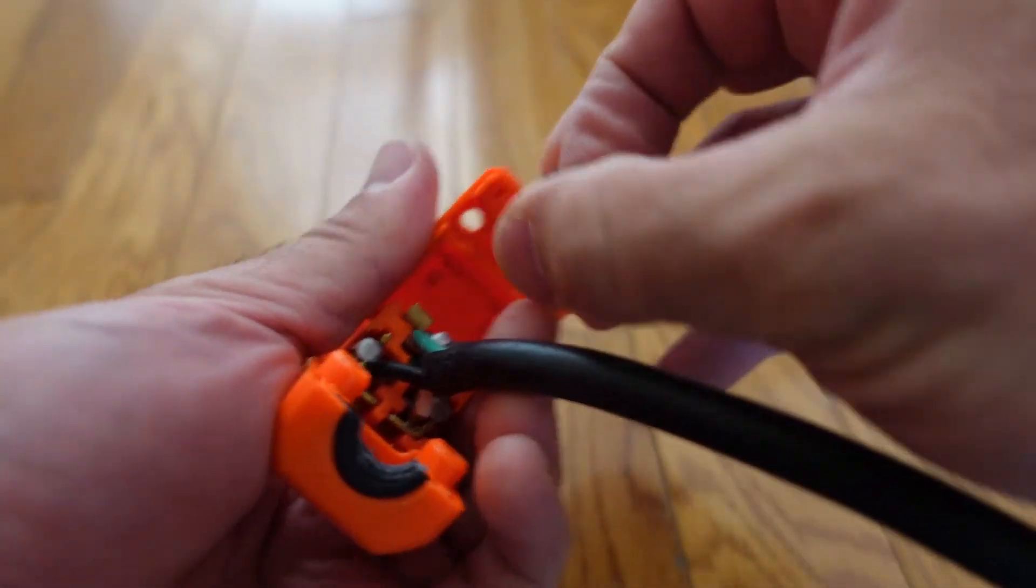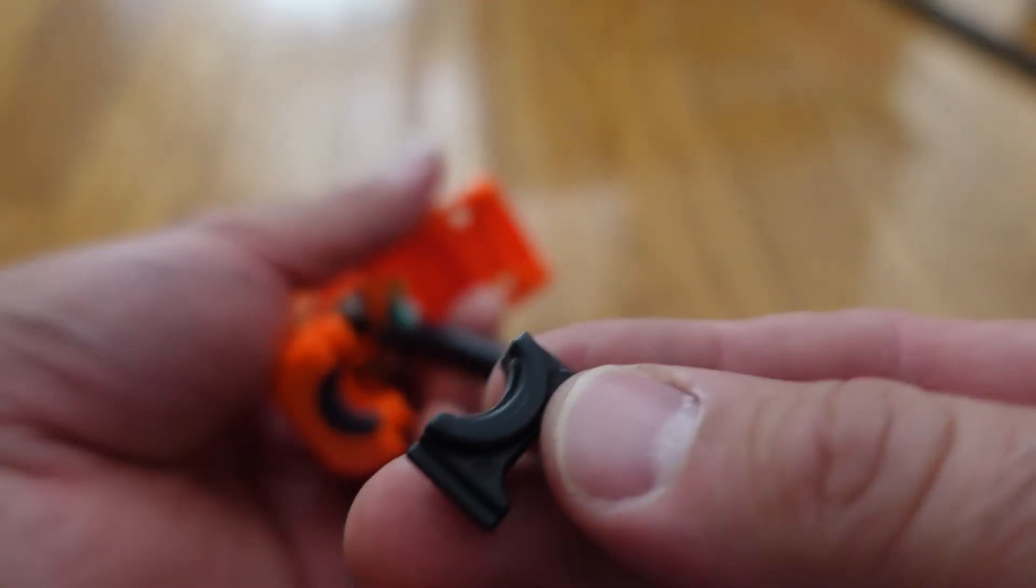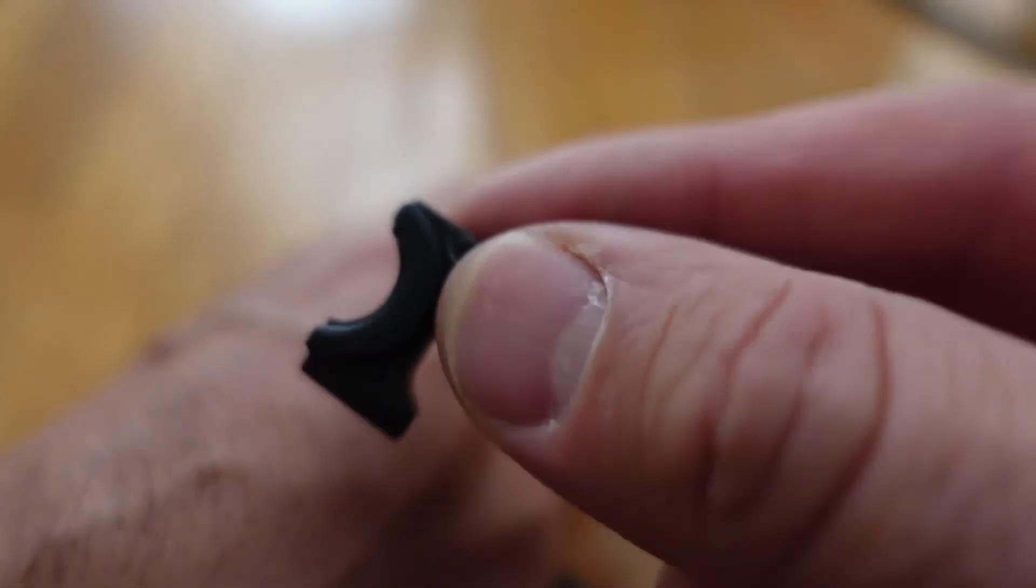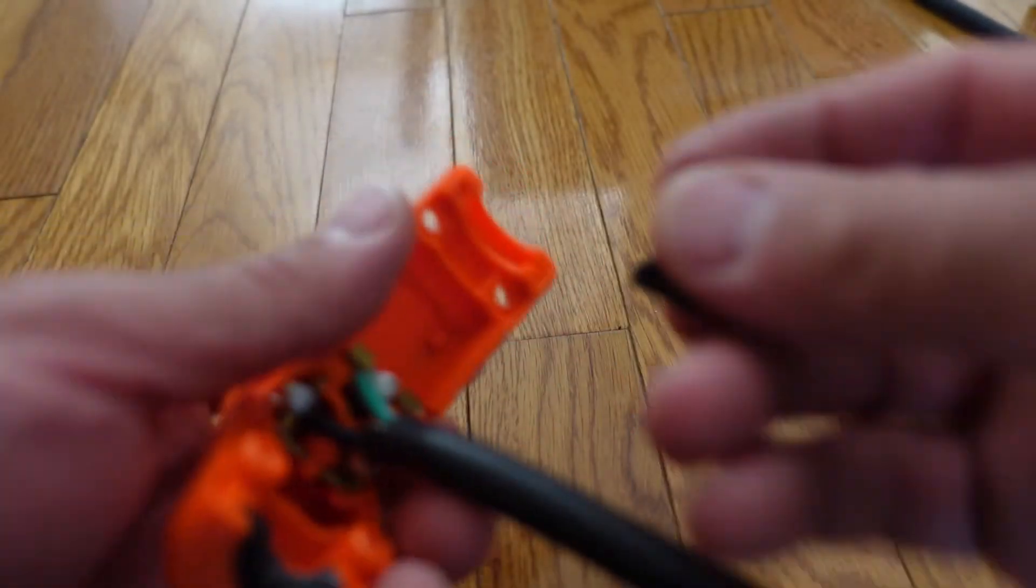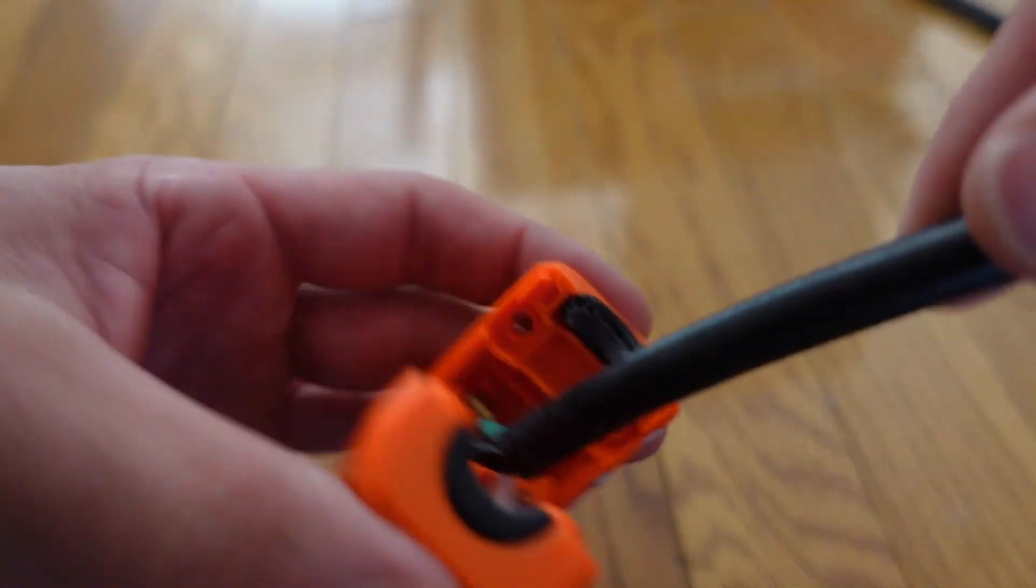For this clamshell plug, you can see that I had to take a dremel tool and just sand those down about two millimeters each all around just because the clamshell wouldn't close around the wire. It seemed to be too fat. I'm not entirely sure why that is.